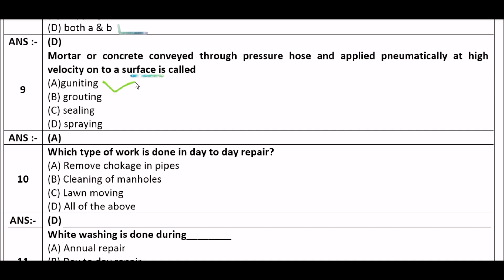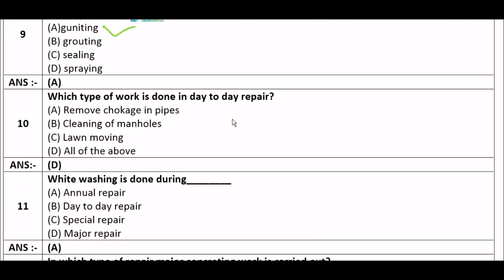Next question: Which type of work is done in day-to-day repair? Option A: remove chokies in pipes, option B: cleaning of manholes, option C: lawn mowing, option D: all of the above. The right answer is option D — all of the above. Removing chokies in pipes, cleaning of manholes, and lawn mowing are all types of work done in day-to-day repair.